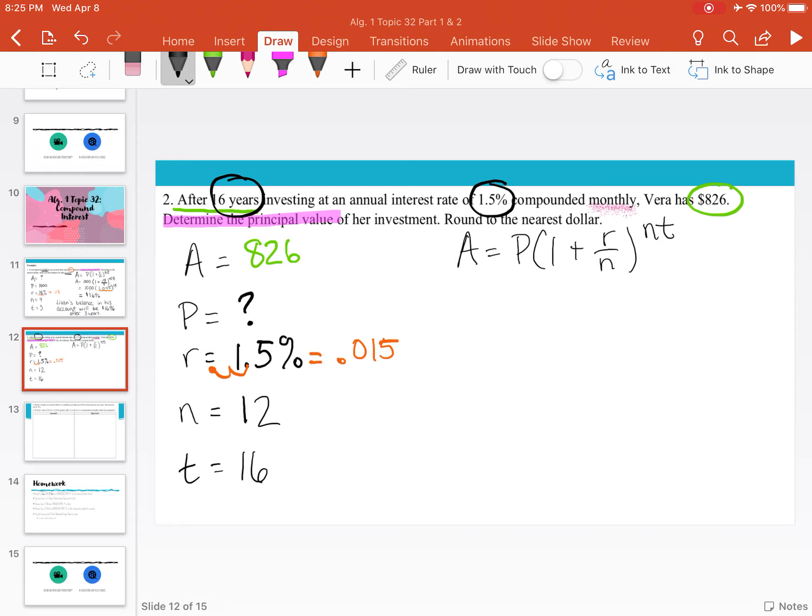So now we can plug in. We have 826 equals P times 1 plus 0.015 divided by 12 raised to the 12 times 16 power.